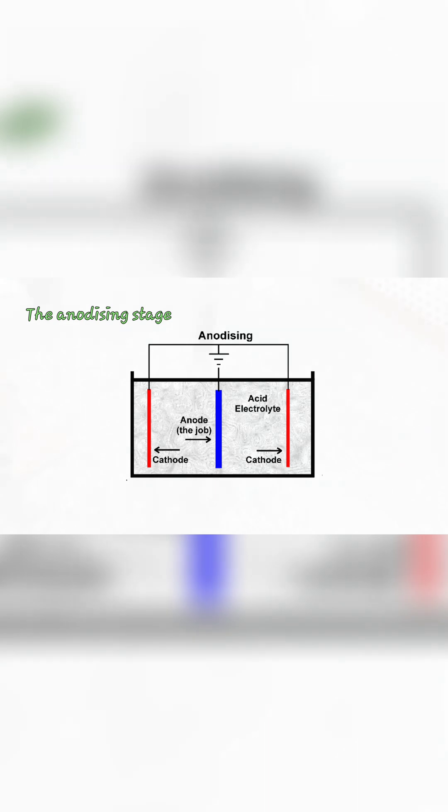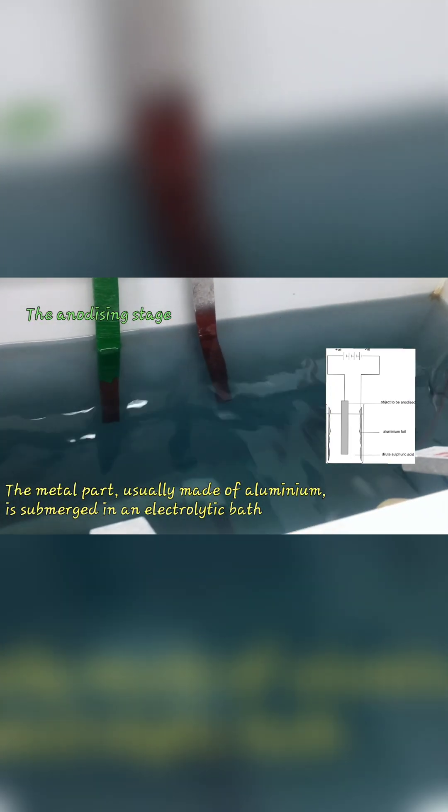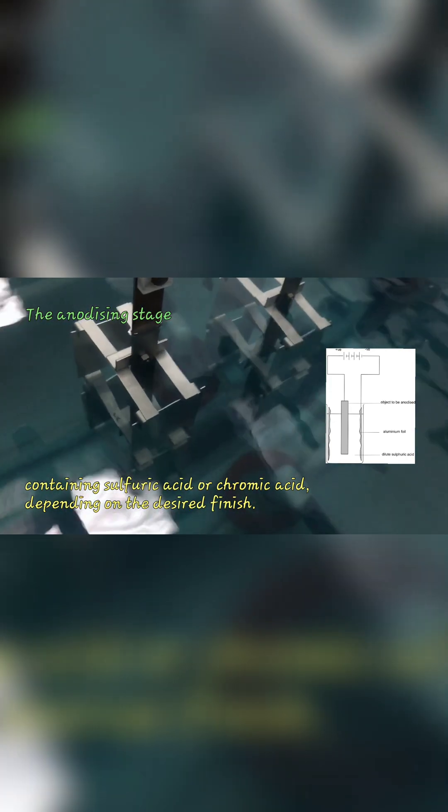The anodizing stage. Once the metal surface is clean, the anodizing process begins. The metal part, usually made of aluminium, is submerged in an electrolytic bath containing sulfuric acid or chromic acid, depending on the desired finish.